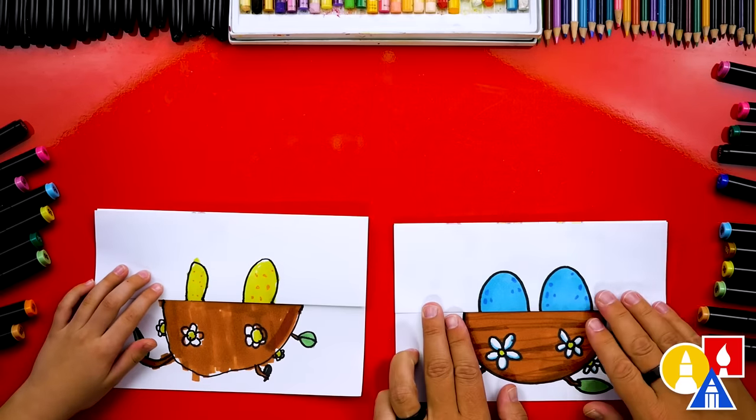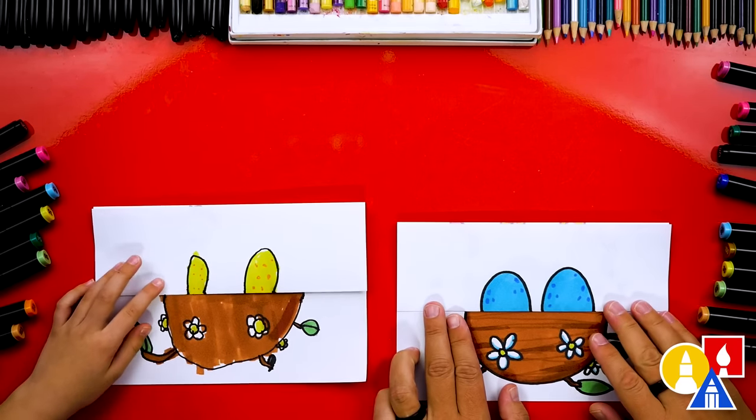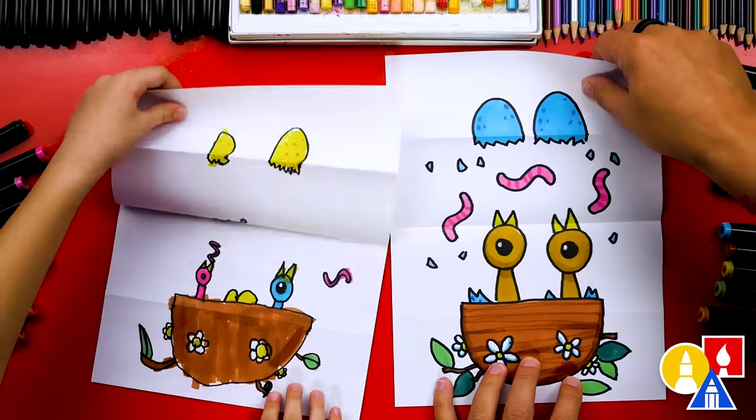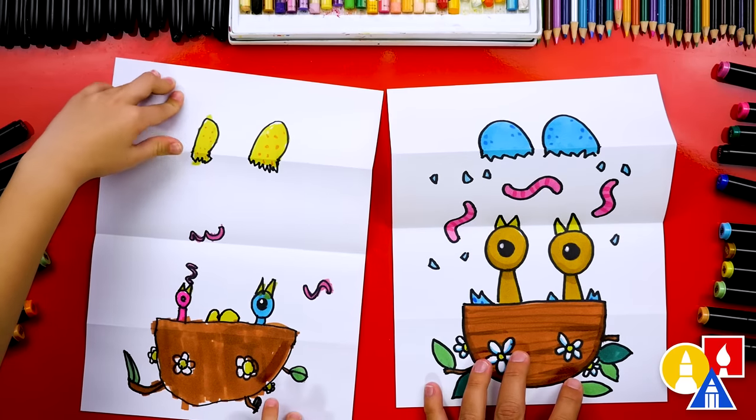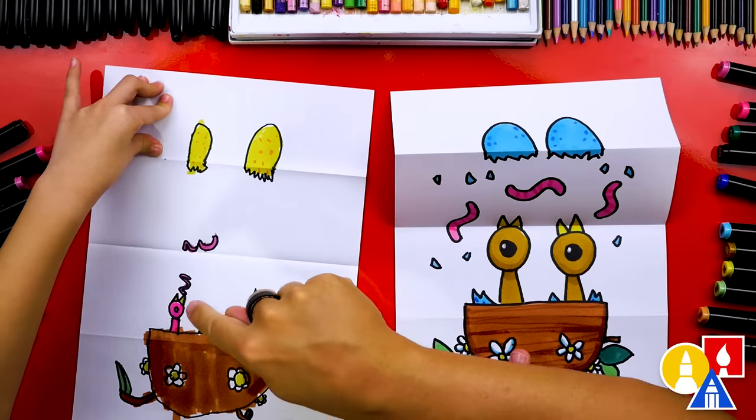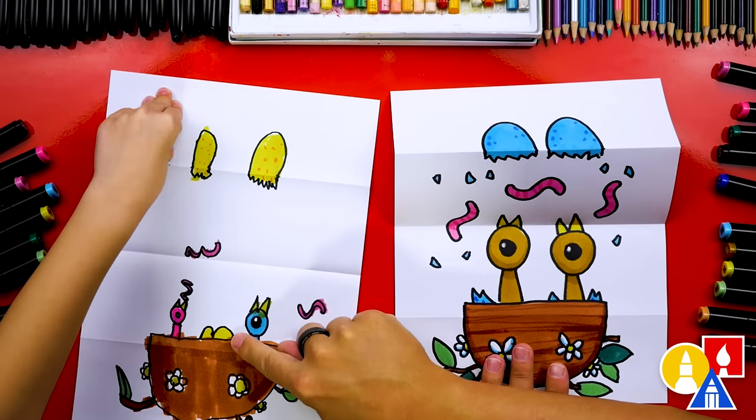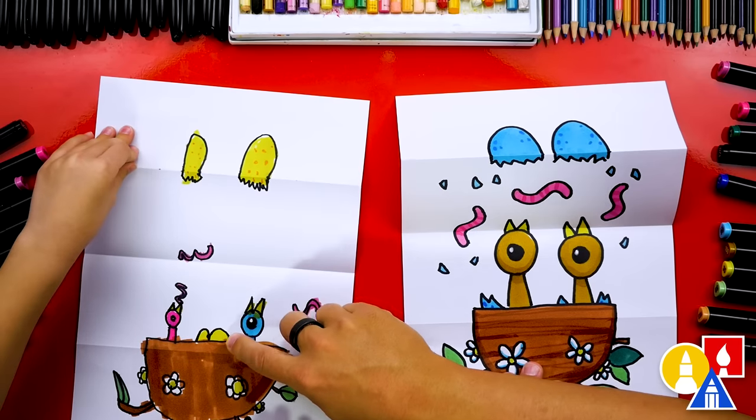We did it. We finished drawing and coloring our nest with the little baby eggs. Should we show our friends the inside? On the count of three. One, two, three. Happy spring! I love yours so much. I really like this little bird that's eating the worm. And you also added more eggs inside. I love that. That looks really cute.